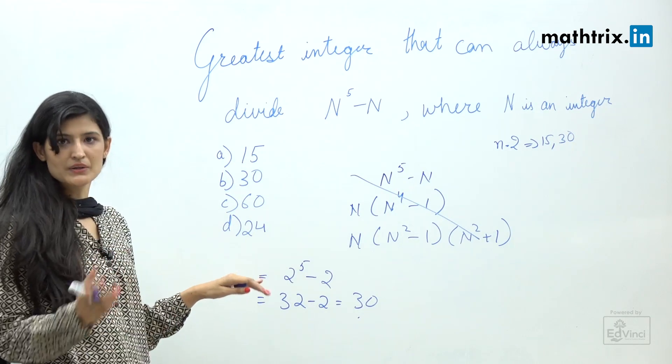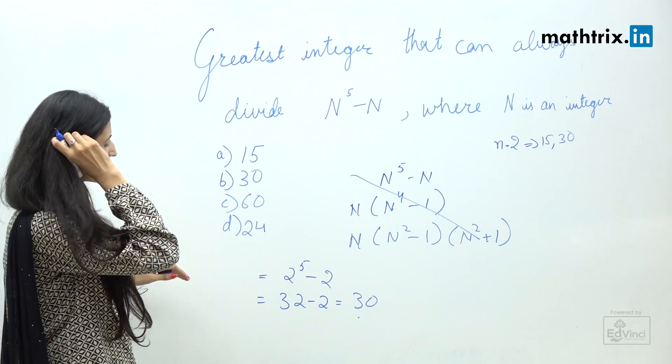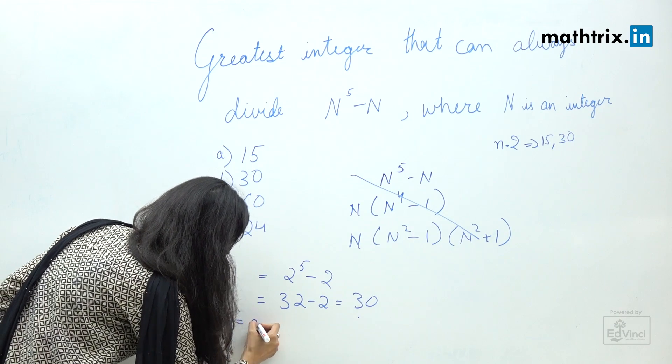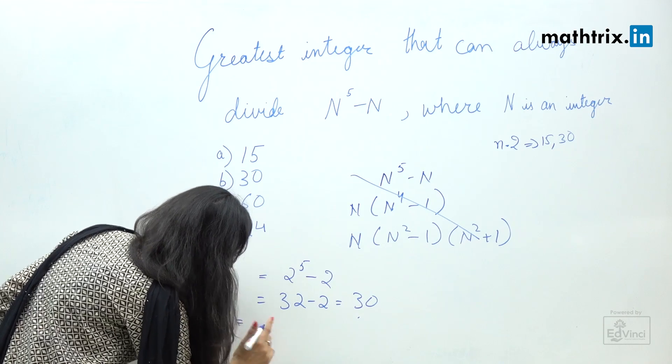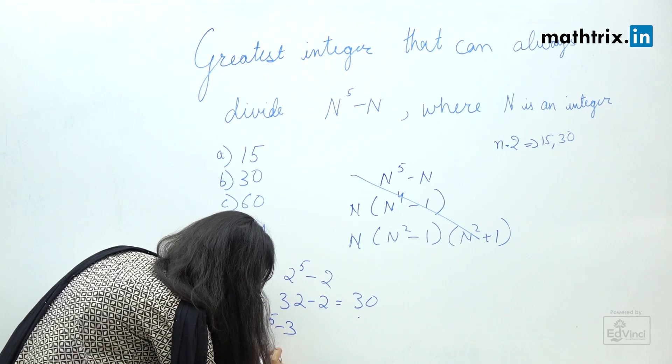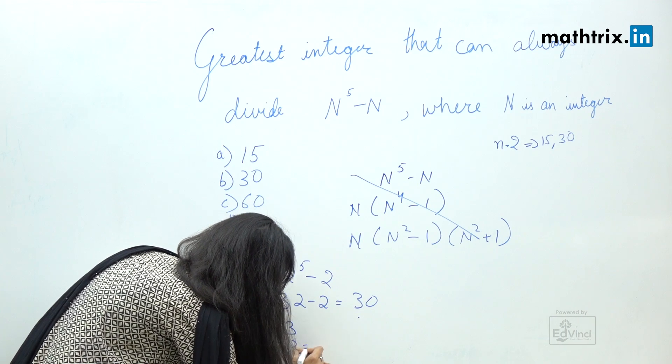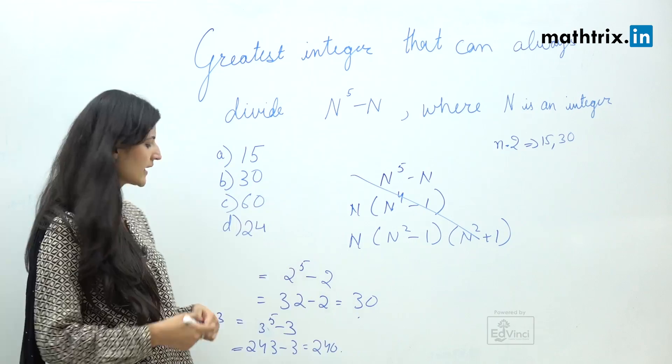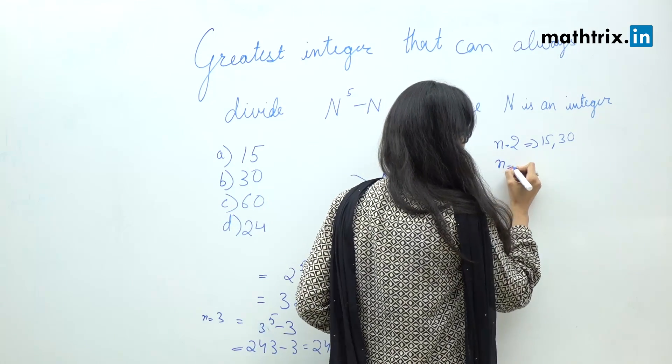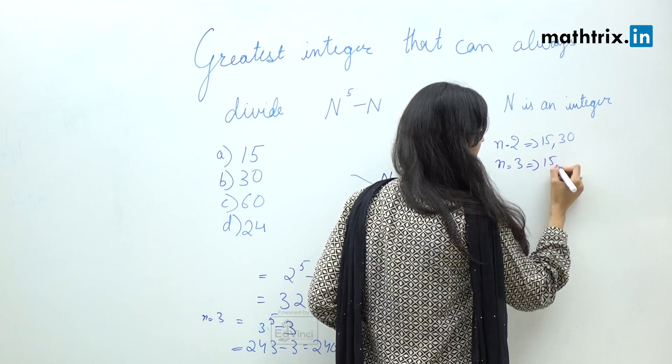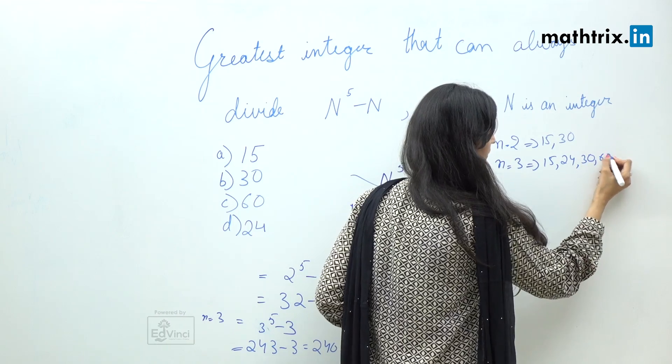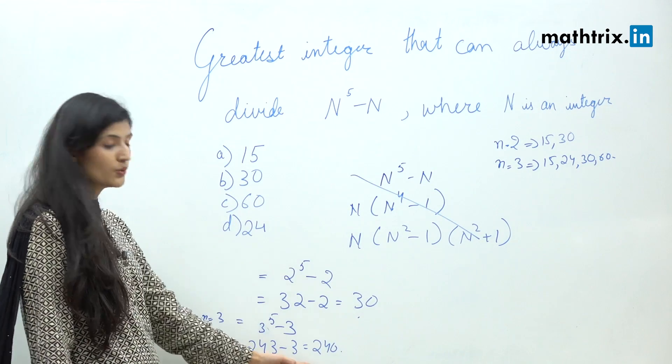So now let's take another integer where n equals 3. If n equals 3, we'll have 3 raised to the power 5 minus 3 which is 240. Okay, so when n equals 3 it can be divided by 15, 24, 30 and 60 all because it's 240.